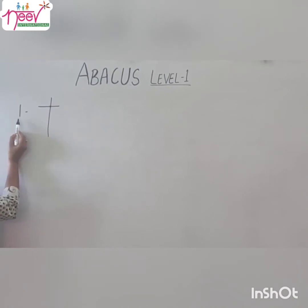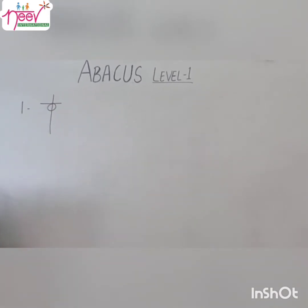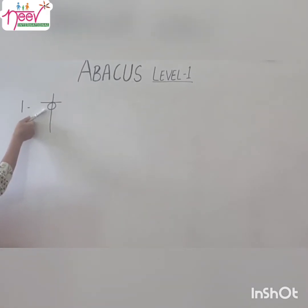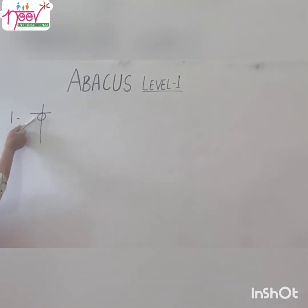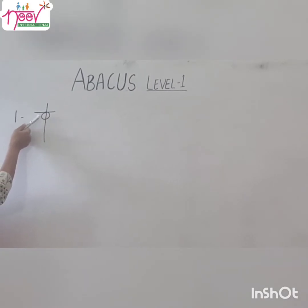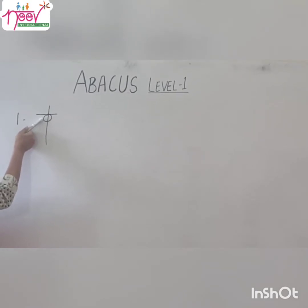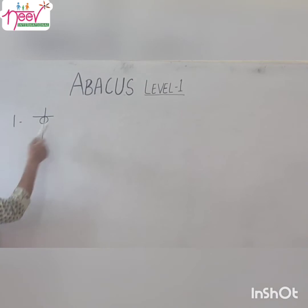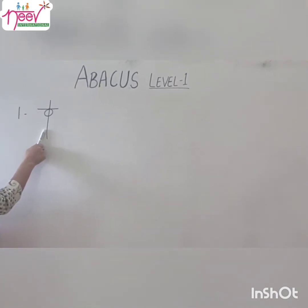Now we want to place value 1, so we will make 1 bead touching the bar. Always remember, if the bead is touching the bar, then only it has a value. If our bead touches the bar, then it has a value. If the bead does not touch the bar, then it has no value. This is represented as 1.